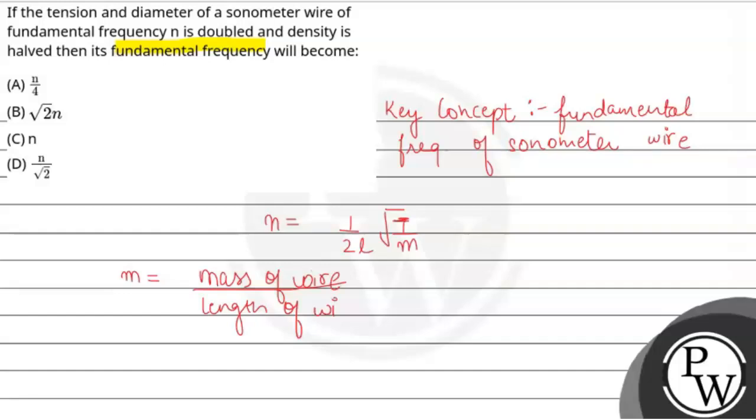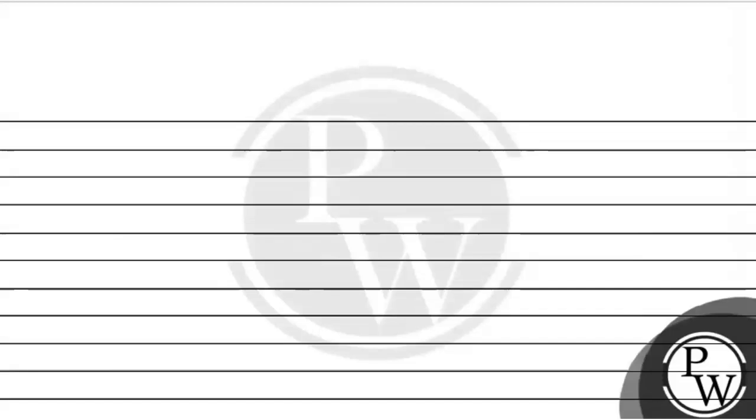Now, mass of wire divided by length. How can we write mass? Volume into density. So, volume into density divided by length. Now, volume can be written as m equals volume can be written as area into length. So, area of cross section into length multiplied by density whole divided by length.